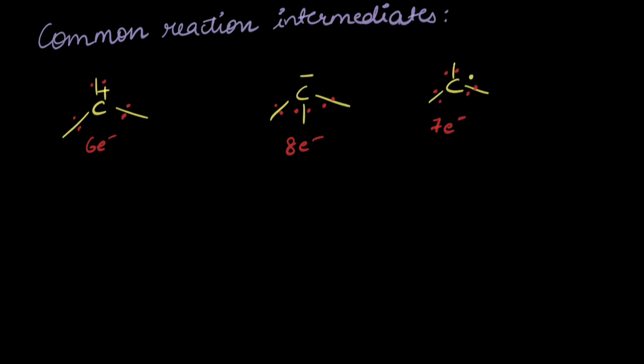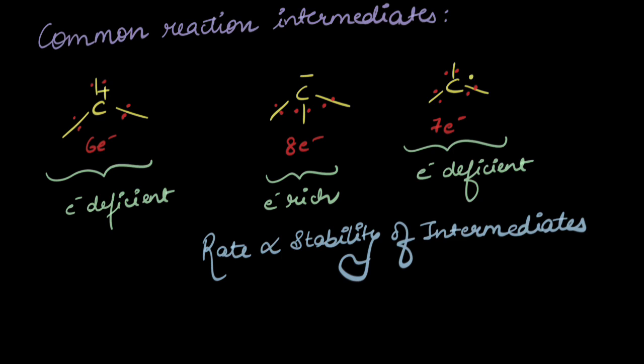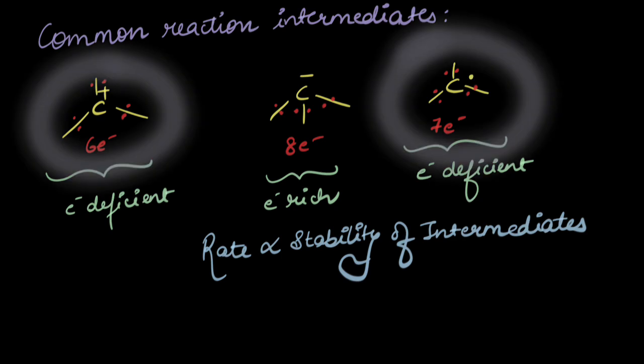The species whose octet isn't complete is actually an electron deficient species, so the carbocation and the free radical are electron deficient. The carbanion, having a negative charge, has a lot of electron density — it is an electron rich species. We also know how the rate of a reaction depends on the stability of these intermediates: the more stable the intermediates, the faster they are formed and the faster the reaction takes place.